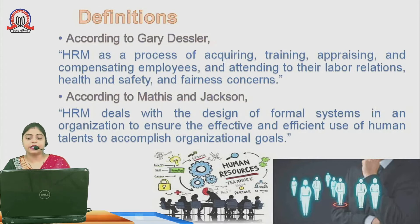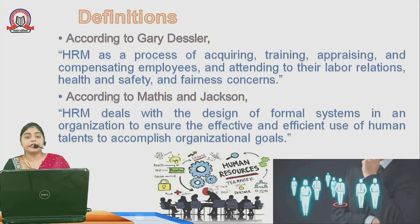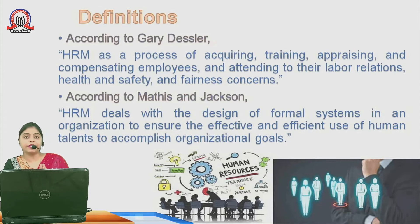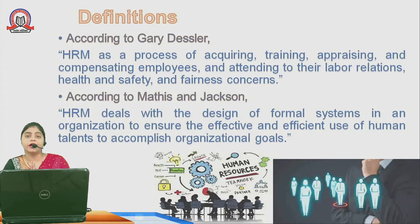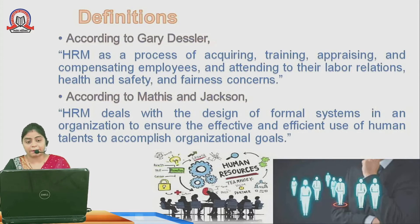Attending to their labor relations is very important — management needs to keep good relations with the labor also, because they are a very important part of the organization. The company needs to think about their health and safety measures. Workers who are working in contact with machinery need to be given fireproof jackets, hand gloves, gumboots, and helmets, so the company can ensure they are securing the health and safety of the workers. Nowadays companies are also giving insurance not only to the employees, but also to their spouse and family members, along with other fairness concerns like perks and other incentives.